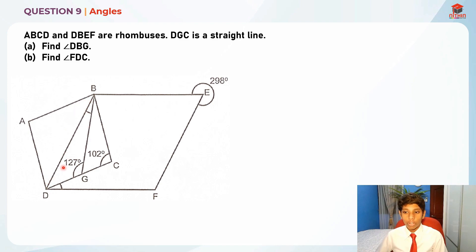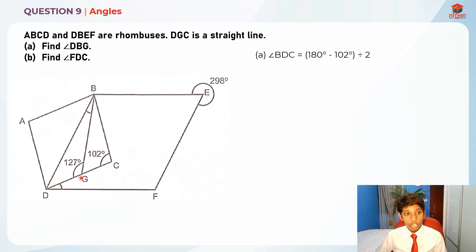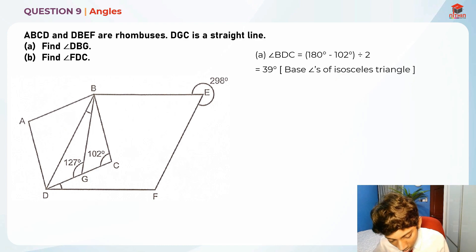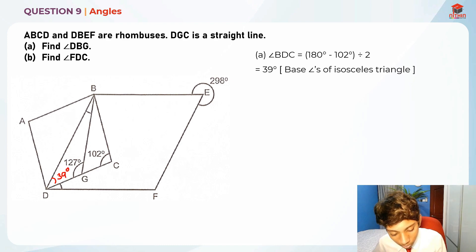The first step is finding the base angles of the isosceles triangle. This gives us 39 degrees — and also this whole angle on the other side is 39 degrees. So these are the base angles of the isosceles triangle.